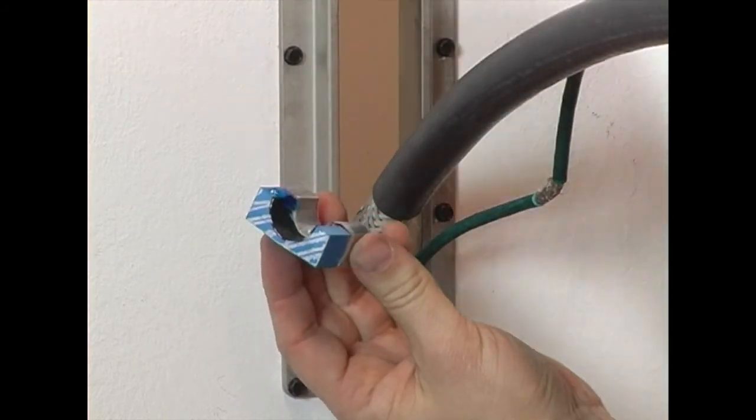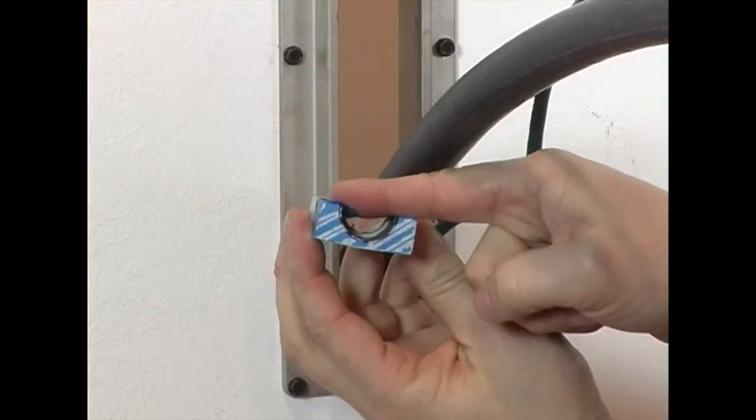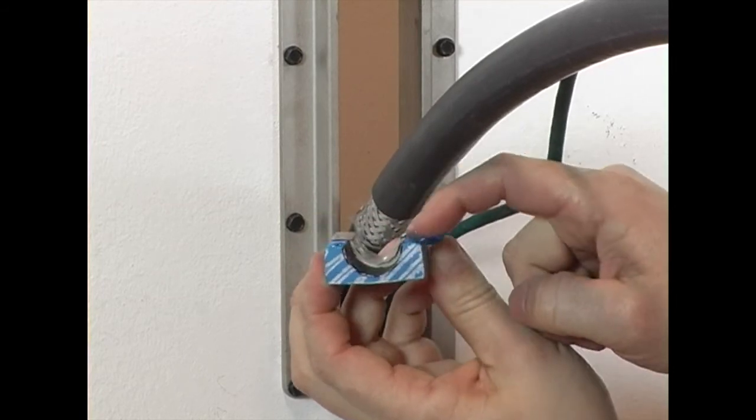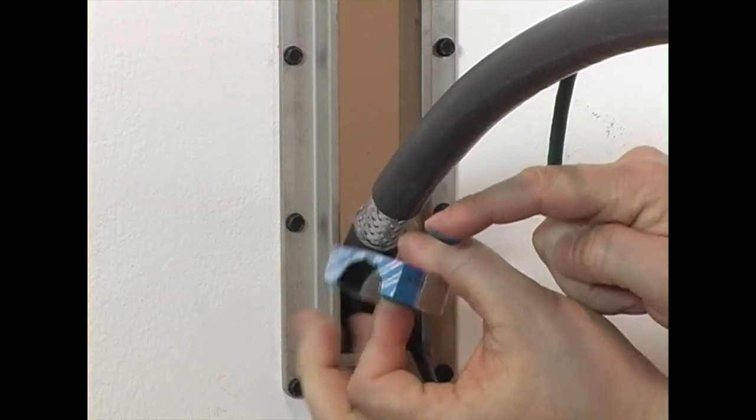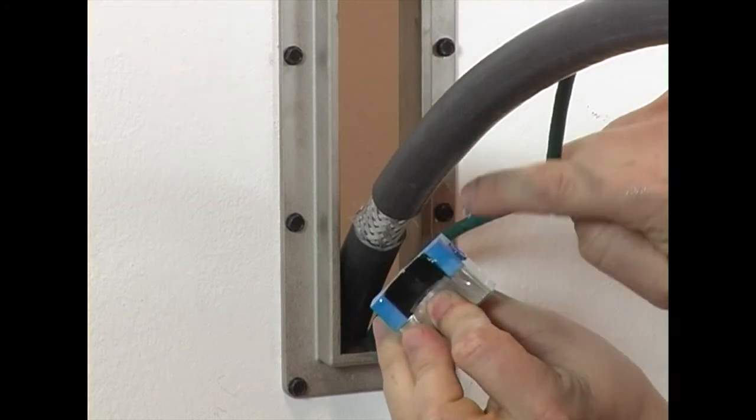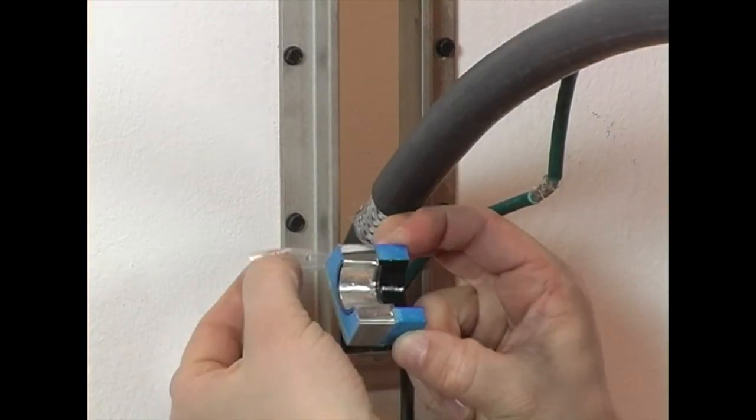Lubricate all modules with Roxtec assembly gel on all faces, except on the foil. Remove the plastic protection from the foil.